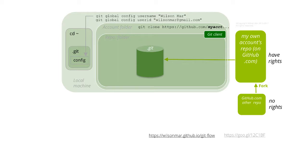During cloning, git automatically extracts files from objects out to the repository's folder, as if you typed a git checkout of the default branch.